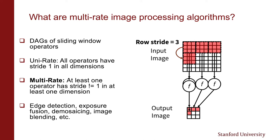A sliding window algorithm is uni-rate if all operators have stride 1 in all dimensions. On the other hand, an image processing algorithm is multi-rate if at least one operator has stride not equal to 1 in at least one dimension. The example on the right is multi-rate because the operation has both row and column stride of 3. This simple model of computation is expressive enough to describe many algorithms for edge detection, exposure fusion, de-mosaicing, image blending, and other important image processing applications.